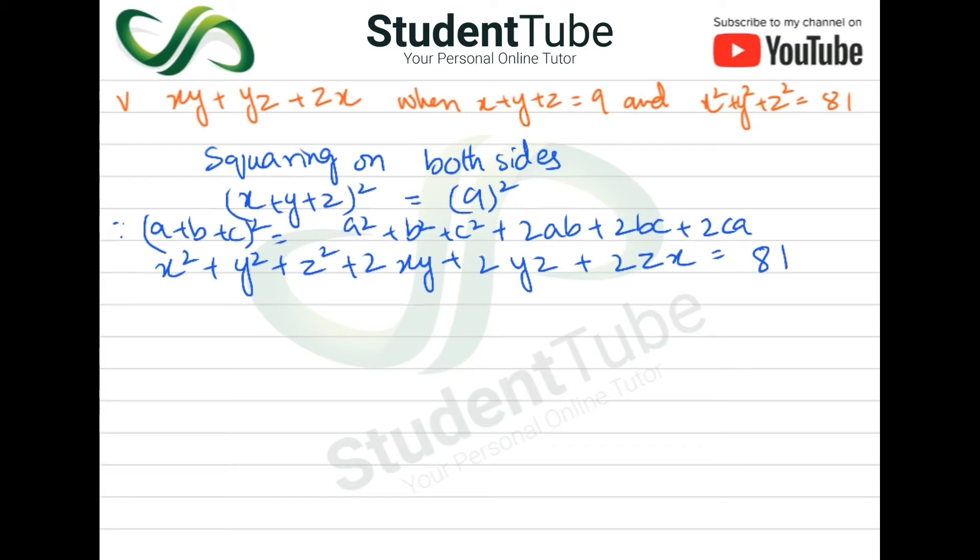Now x² + y² + z² = 81. Here we will take 2 common, and the rest will come in this bracket: xy + yz + zx, and is equal to 81.